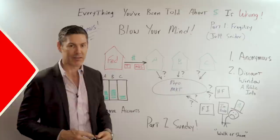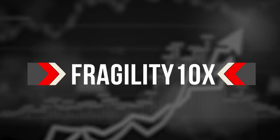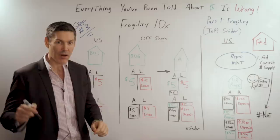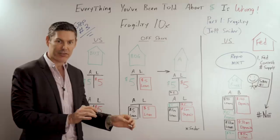Step number three, fragility 10x. If you saw part one of my interview with Jeff Snyder last night, and if you haven't, make sure you check it out. Link in the description below. You saw that he used a $5 bill to illustrate how the euro dollar system actually works.